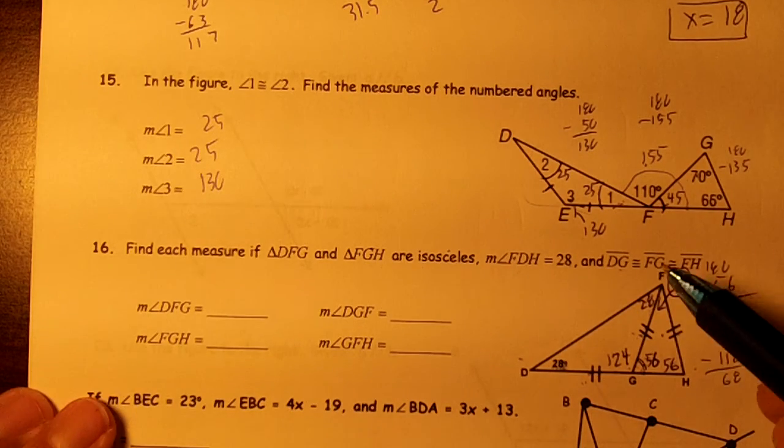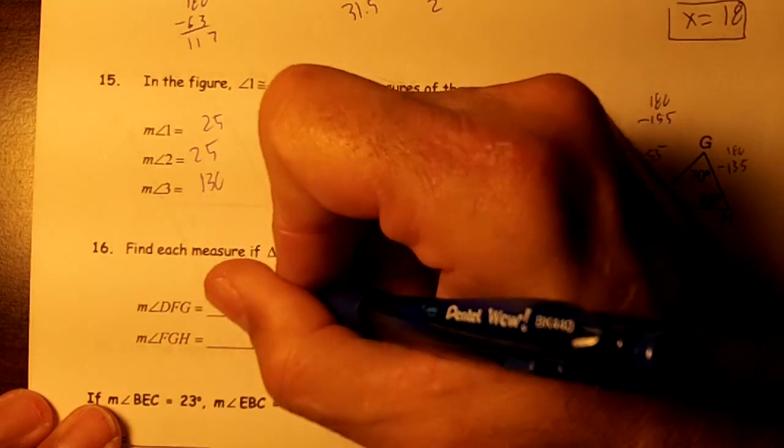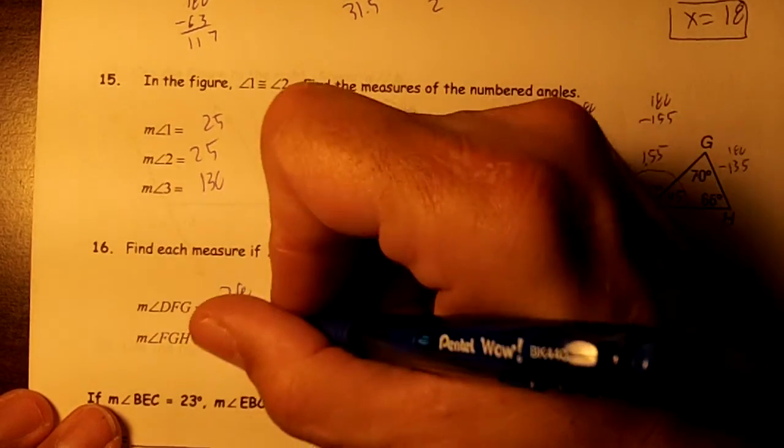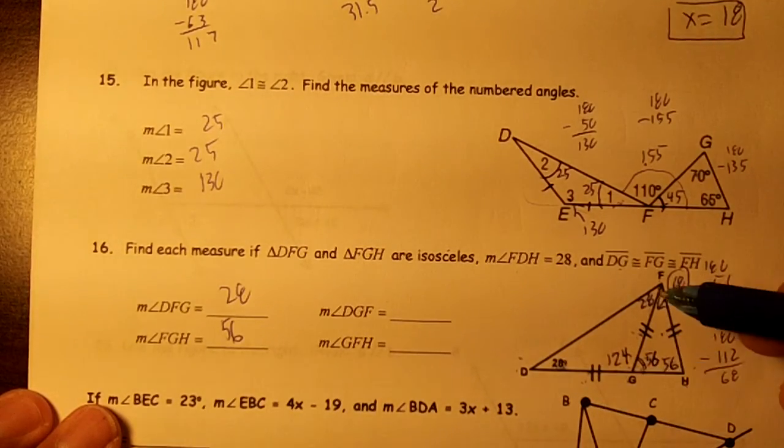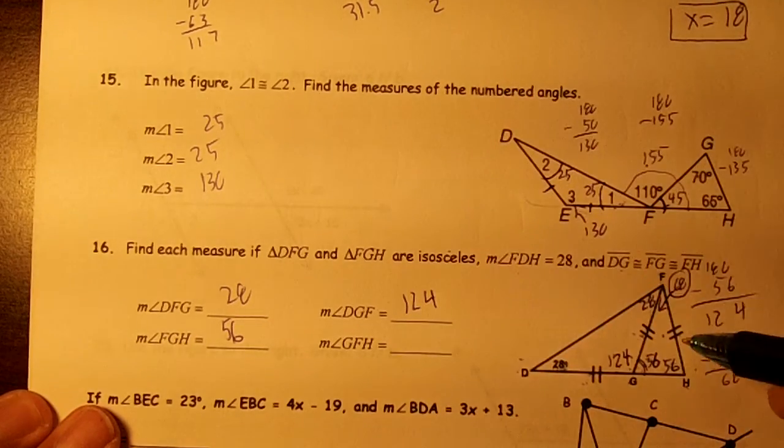This plus this plus this has to add up to 180. So DFG is 28, FGH is 56, DGF is 124, and GFH is 68.